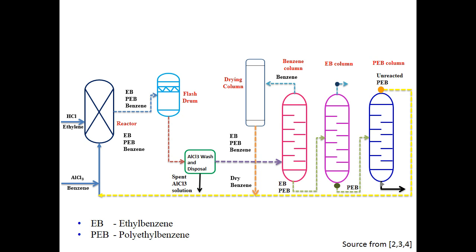The bottom product of the benzene column is fed into the ethylbenzene column to separate the ethylbenzene and polyethylbenzene. The polyethylbenzene is recycled back into the reactor.